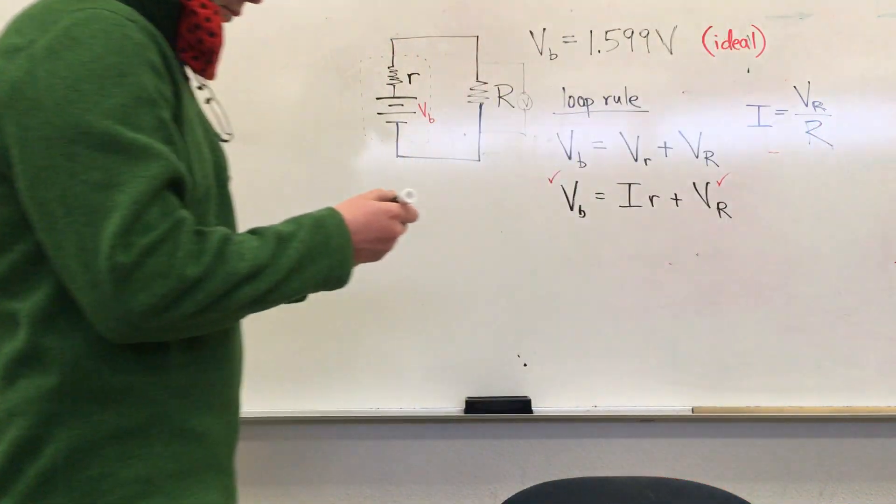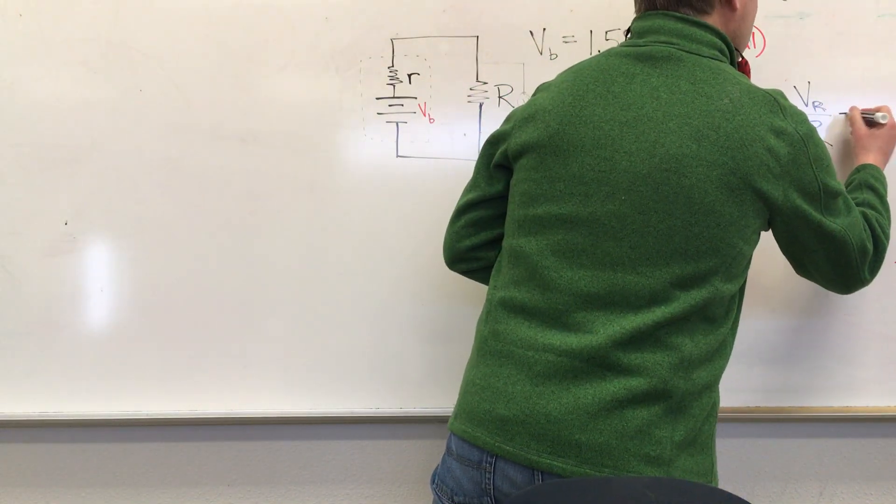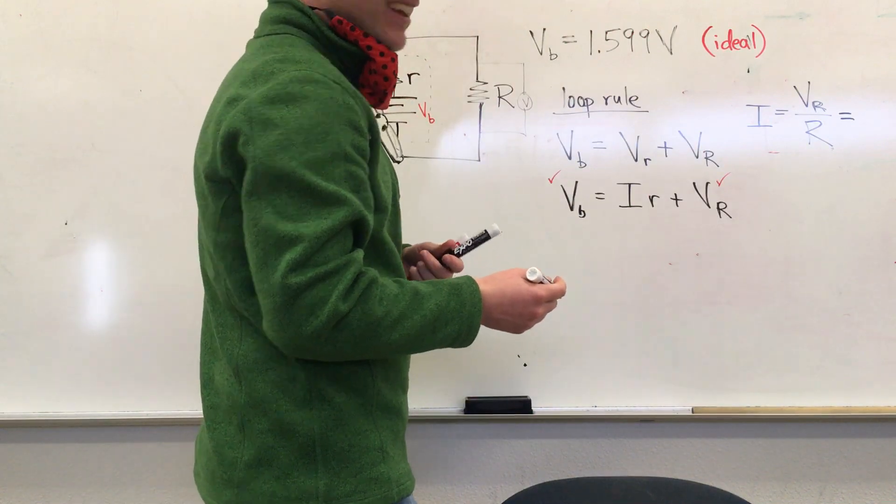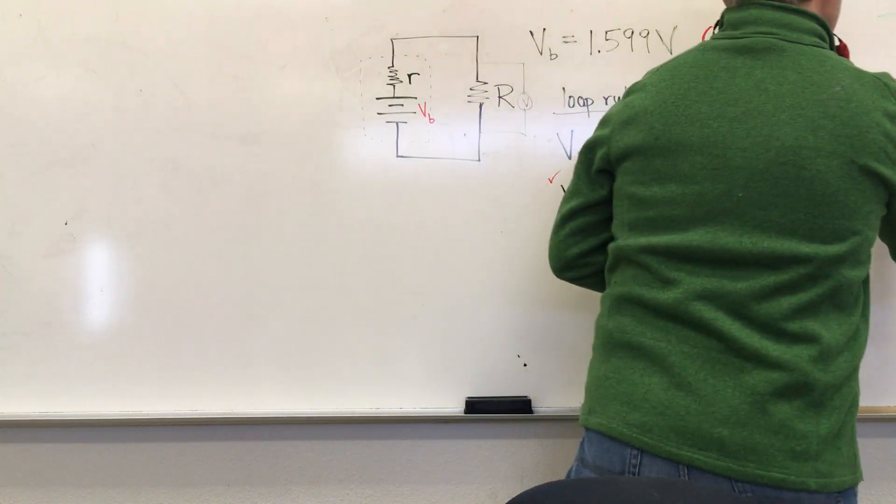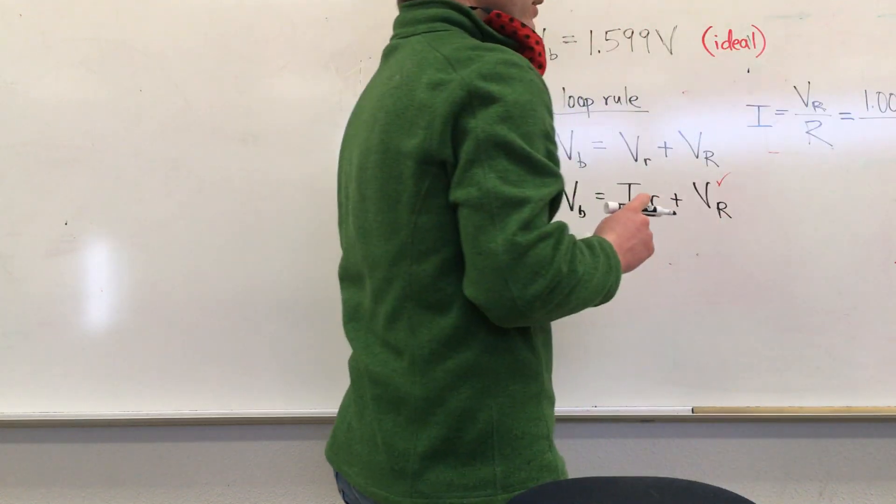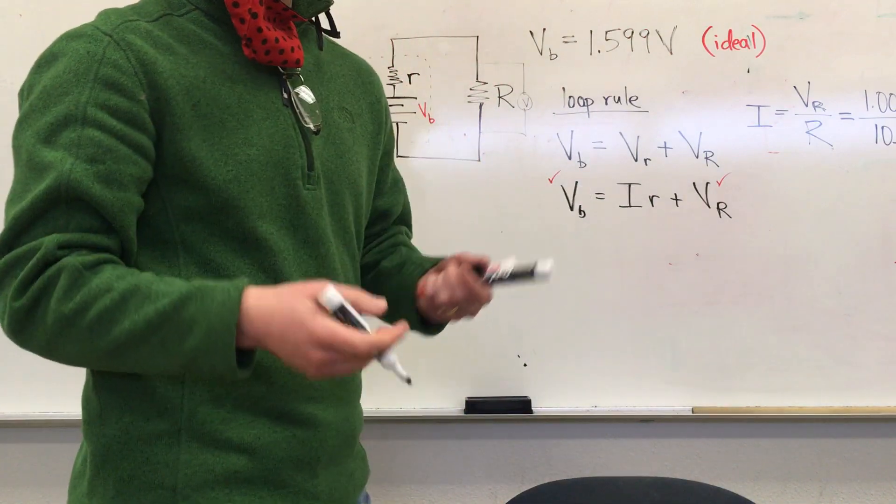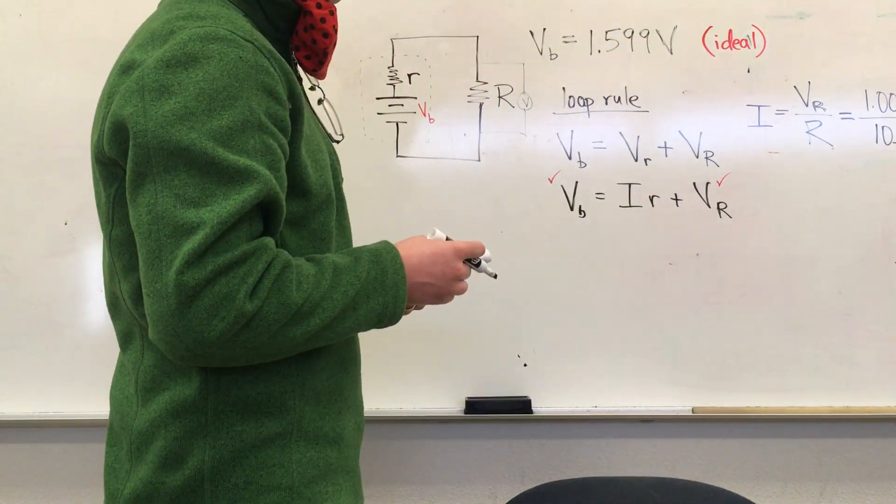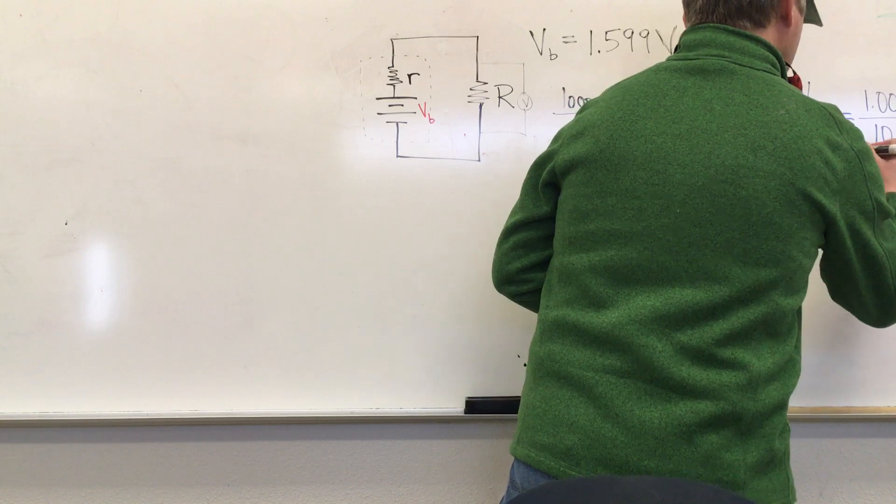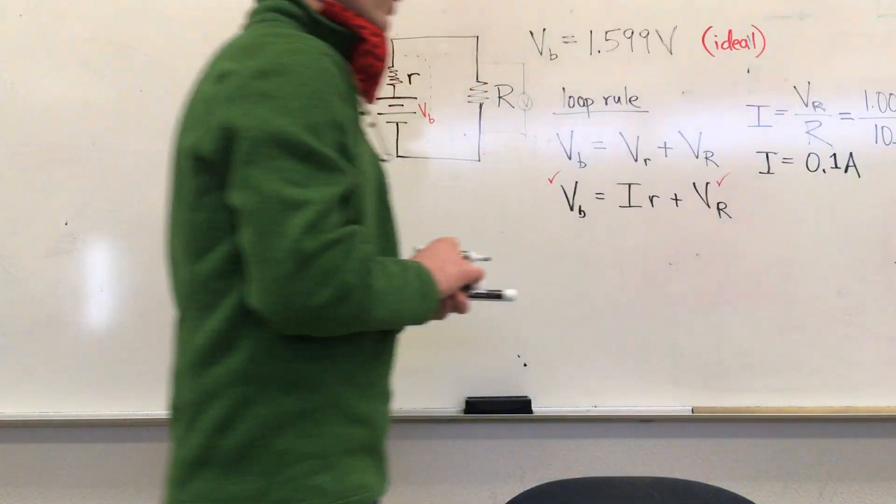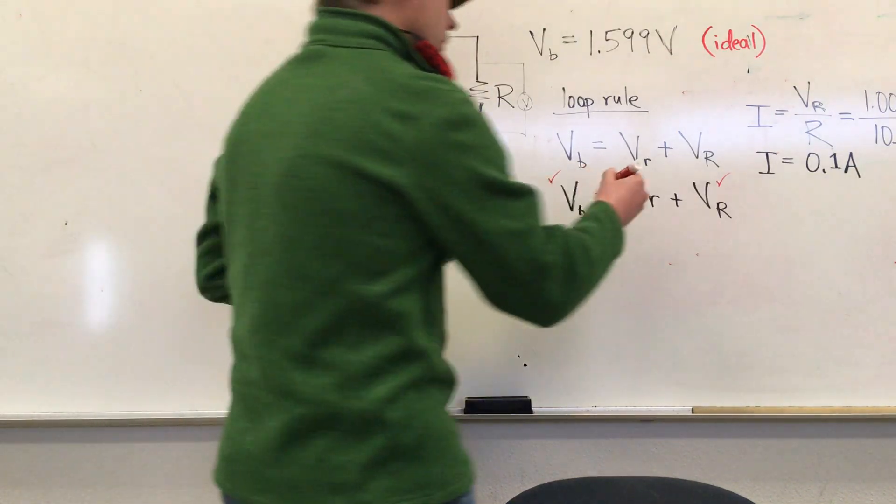The current is going to be V sub R, the voltage drop across the external resistance we can actually measure directly, divided by the value of that external resistance. For our set of numbers, we've got a voltage drop over the first resistor, the 10 ohm resistor, of just 1 volt, and the resistance of that resistor we're taking to be exactly 10 ohms. That gives us a current in this first case of 0.1 amps.